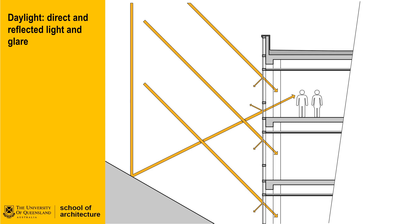Daylight has two effects on internal space. We have discussed the transfer of heat in another video; however the effect of light also brings benefits and consequences we need to deal with in terms of light. A simple unshaded facade admits daylight indiscriminately. The way light is regulated in this instance is dealt with by the properties of the glass itself.